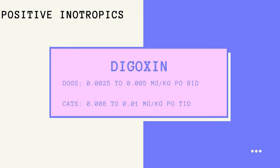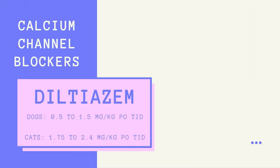Digoxin needs to be stopped immediately if the patient shows signs of adverse reactions. Diltiazem is a calcium channel blocker used to help control certain heart rhythm disturbances and to promote heart muscle relaxation in hypertrophic cardiomyopathy, especially in cats. In dogs with atrial fibrillation, it may be used with digoxin to slow the rate of heartbeats. Adverse heart effects are uncommon at standard doses but can include decreased appetite, slow heart rate, and gastrointestinal problems.